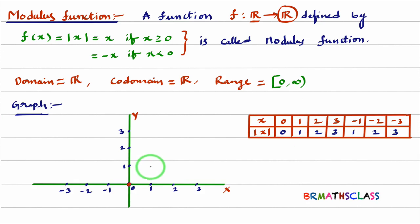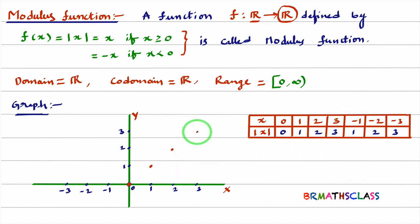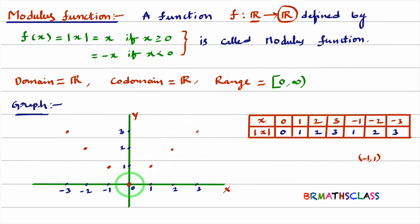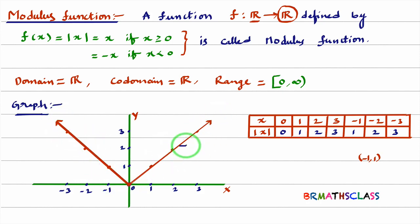The point (1, 1) is here. Next point (2, 2) is here. The point (3, 3) is here. Next, point minus 1, 1 — x is negative, y is positive, so it lies in the second quadrant. This is the point (−1, 1). Point (−2, 2) is here. Next, point (−3, 3) is here. Now I will join these dots. On one side it looks like a straight line, and joining the other side also, we get a V symbol. The graph of modulus function looks like a V symbol.